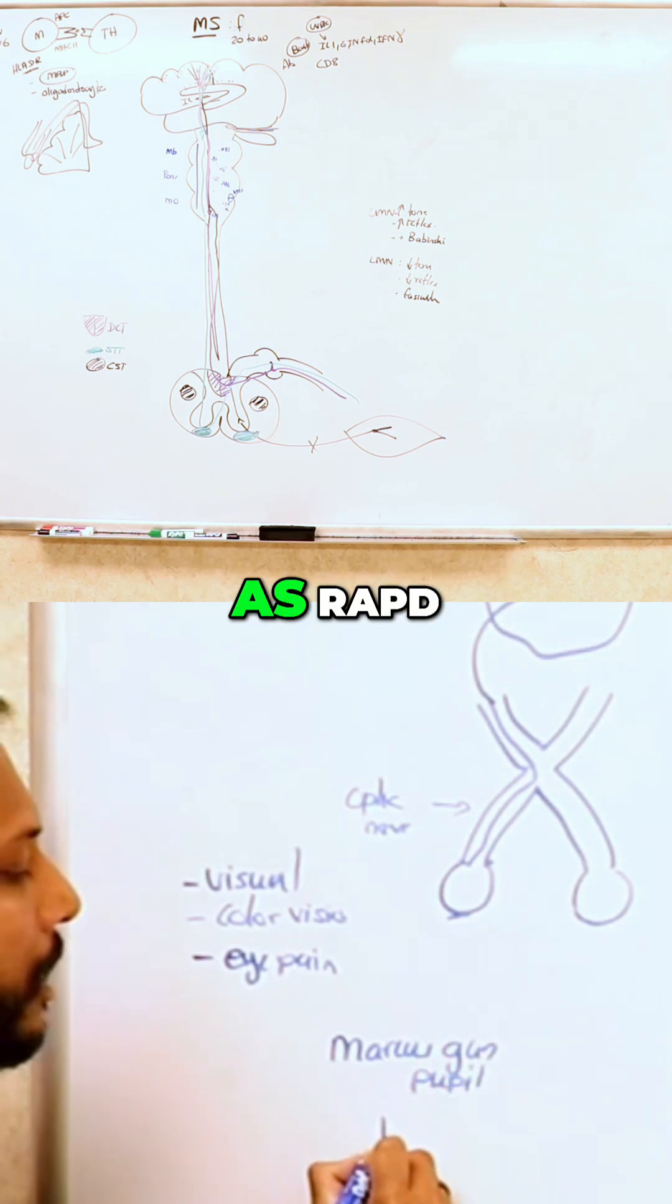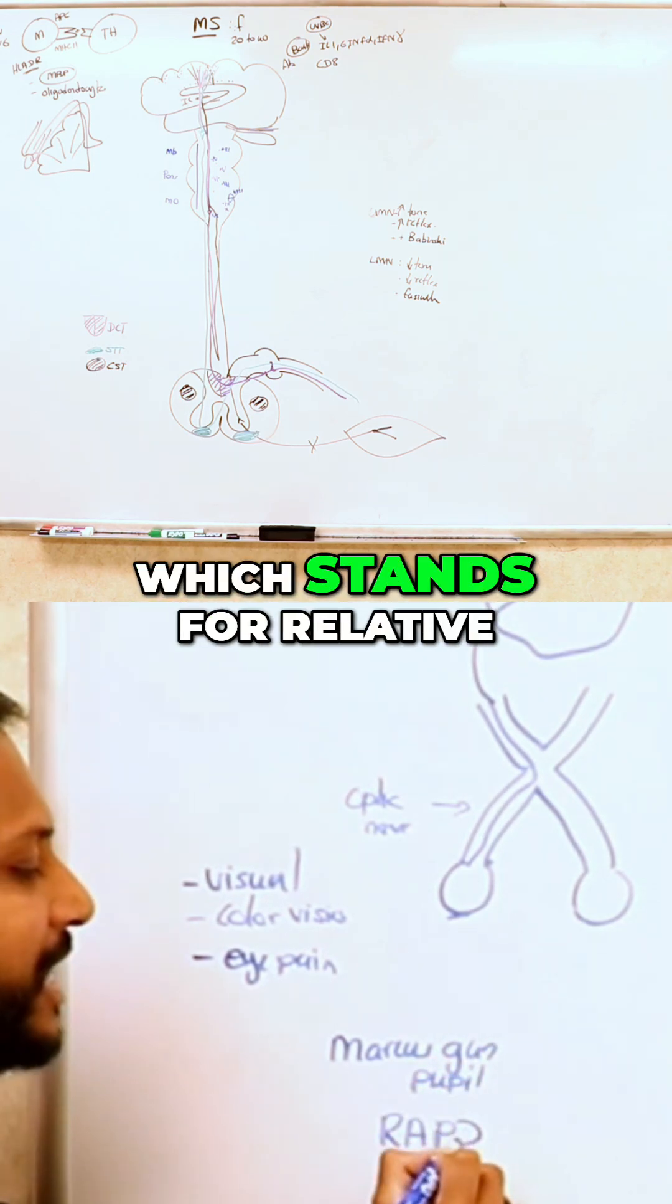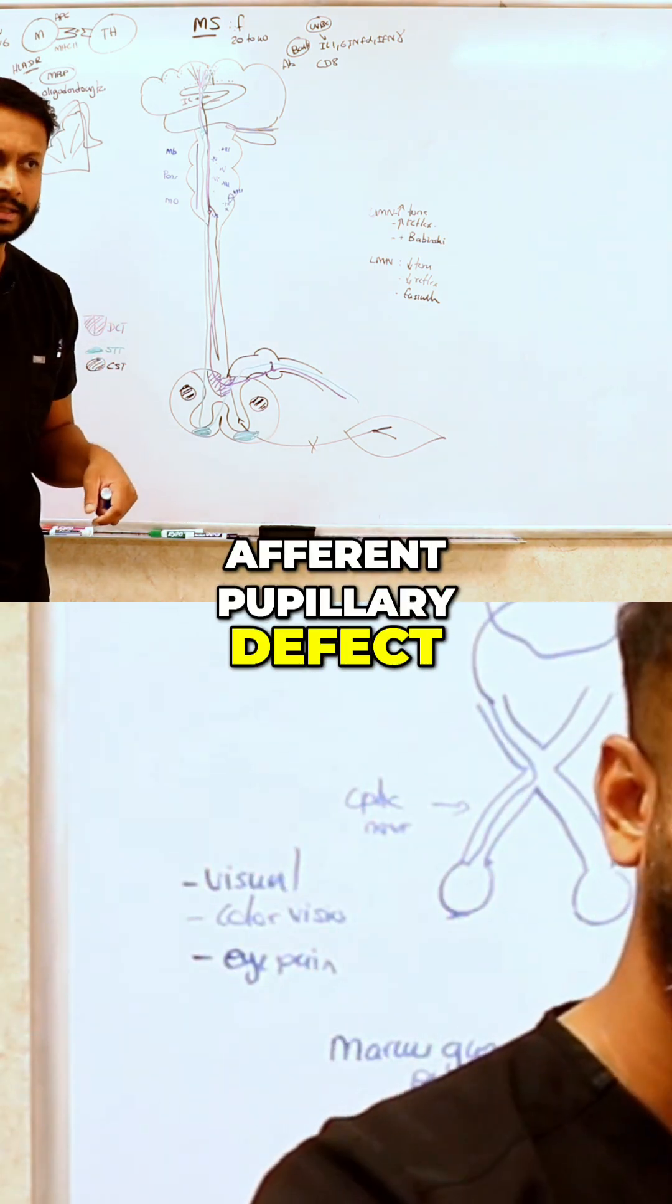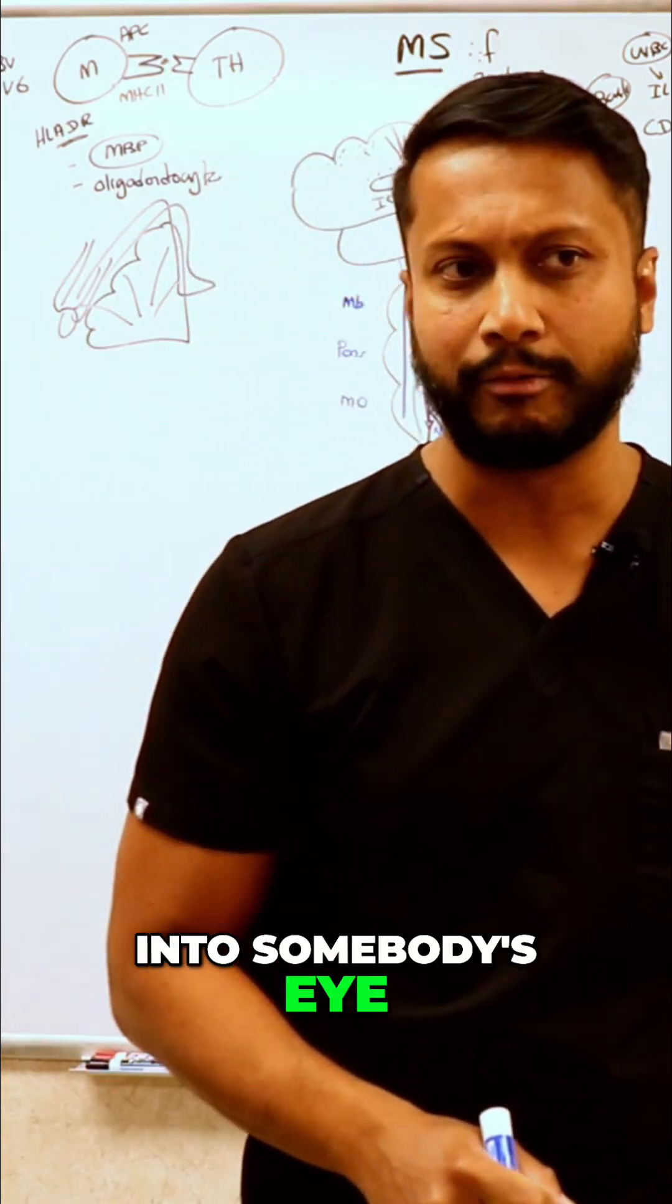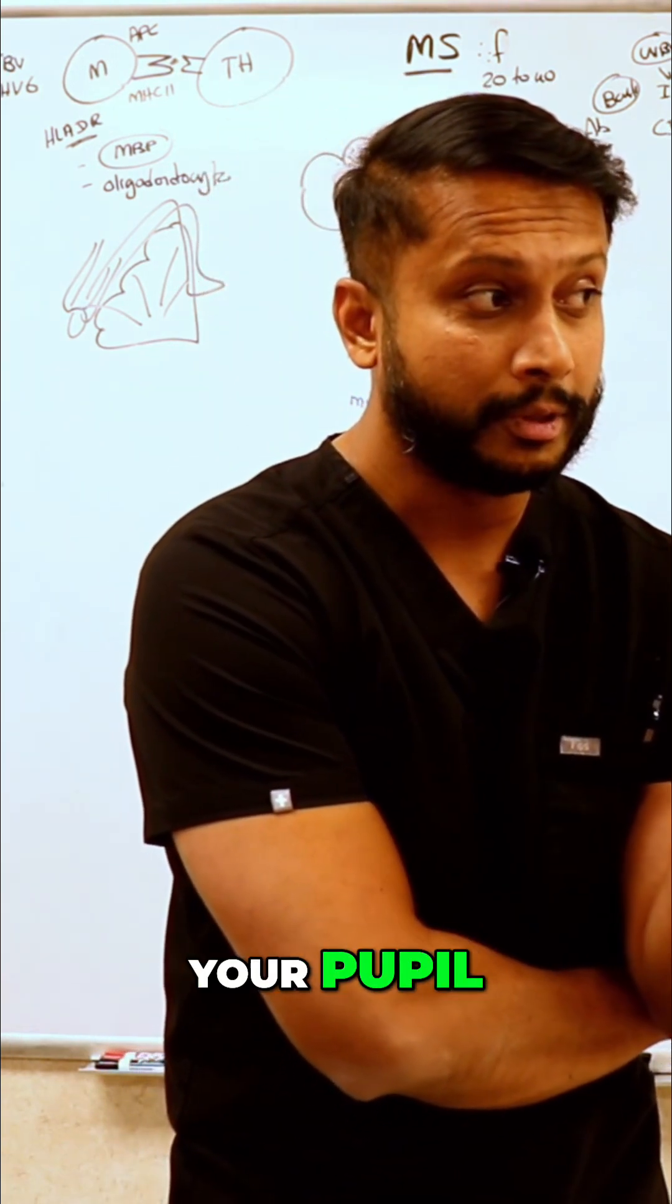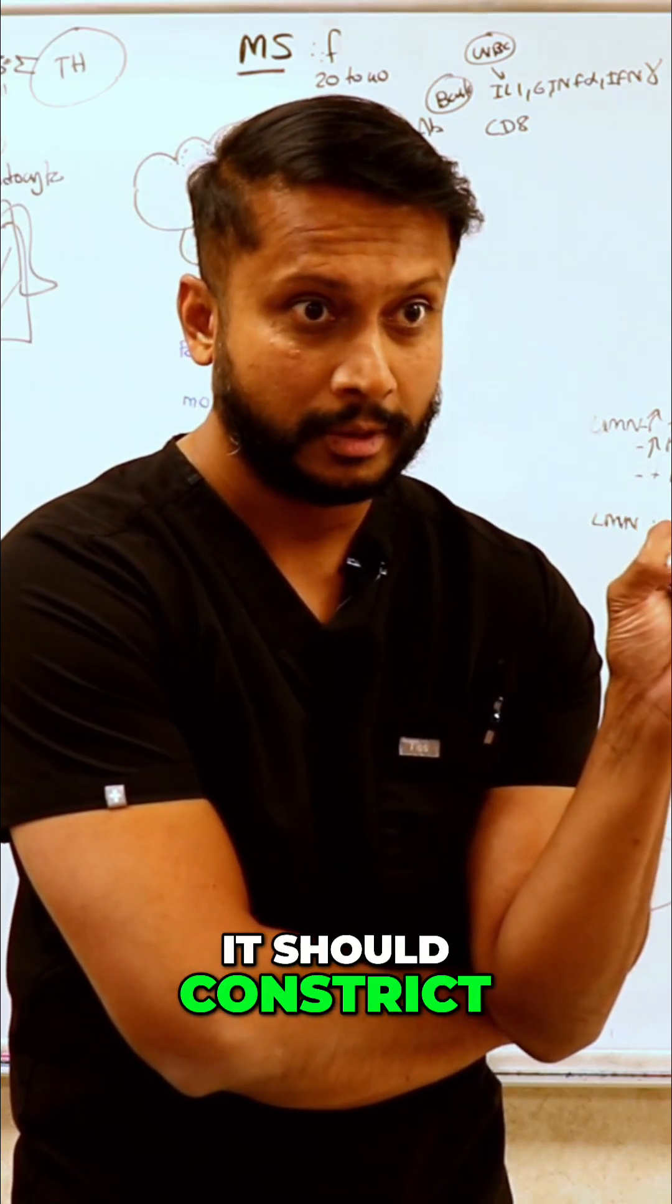This pupil finding is also known as RAPD, which stands for relative afferent pupillary defect. When you shine light into somebody's eye, what should happen to your pupil? It should constrict. If you go into a dark room, it should dilate, right?